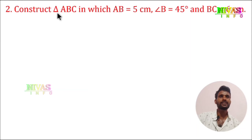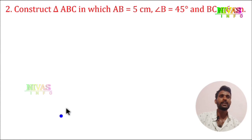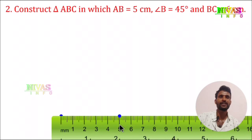Next question. Construct triangle ABC in which AB is equal to 5 cm, angle B is equal to 45 degrees, and BC is equal to 6 cm. I will draw the triangle. AB is equal to 5 cm. I scale this to 5 cm, marking points A and B.